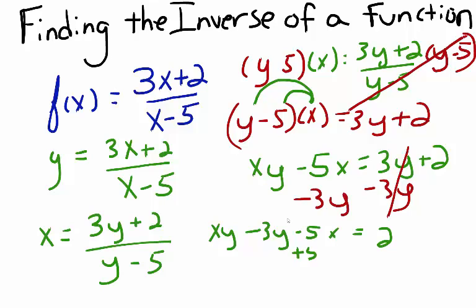Now, I'll take the term not containing y, my 5x, and add it to both sides. So after I add 5x to both sides, I'm left with xy minus 3y equals 2 plus 5x.